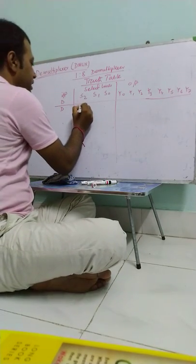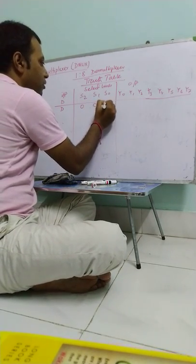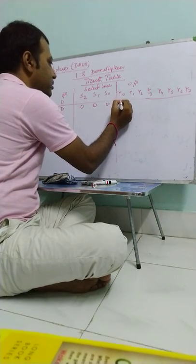Input is D. When all select lines are 0, then Y0 is selected.